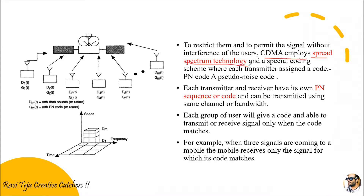Each and every transmitter, or user, will be assigned a code. That code or sequence is called a PN code — the abbreviation stands for Pseudo Noise code. Whoever the transmitter or user wants to transmit a signal, or the user who wants to receive the signal, each and every transmitter as well as receiver will be having their own particular code.